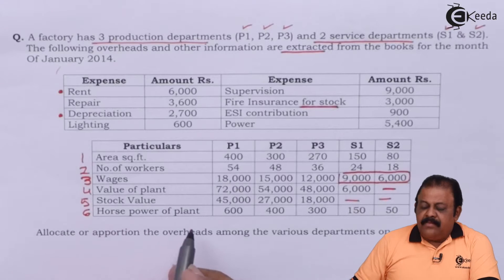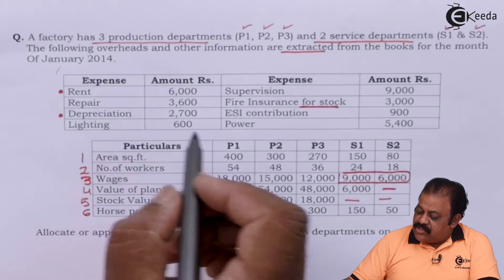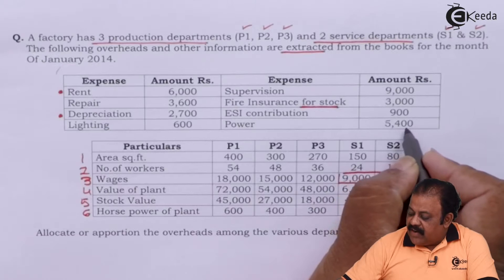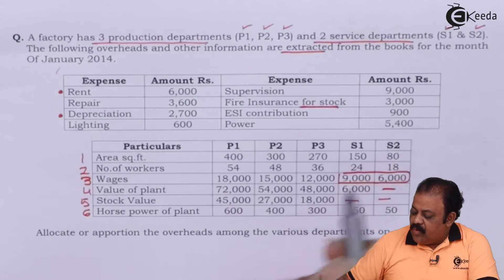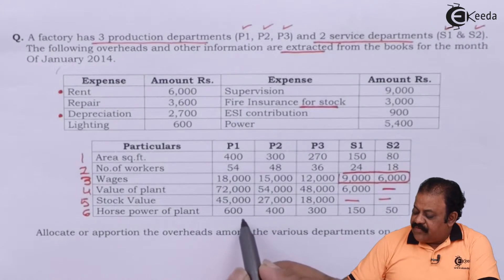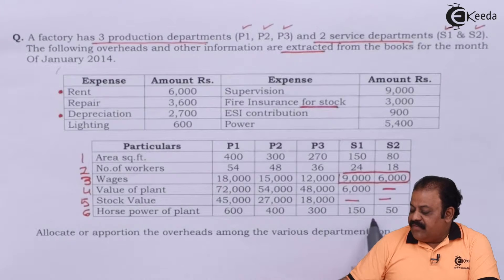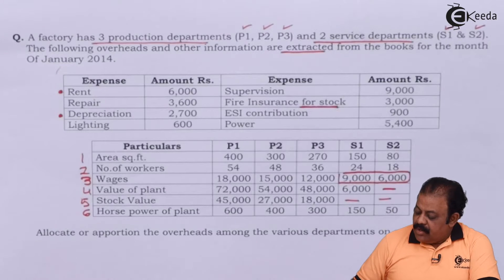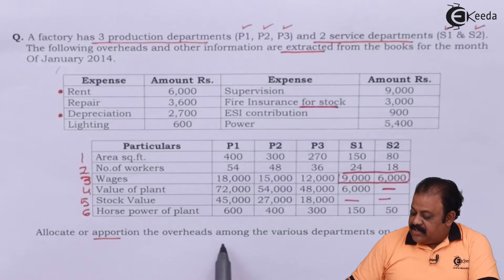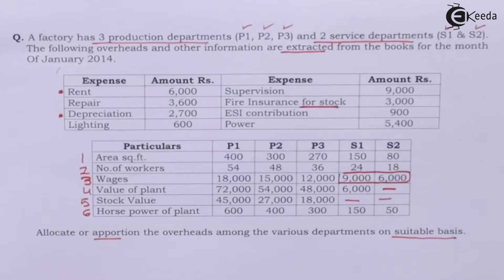Horsepower of plant is the parameter used to allocate the expense of power, which is 5400. It will be divided in the ratio of 600 to 400 to 300 to 150 to 50. We are required to allocate or apportion the overheads among the various departments on a suitable basis.